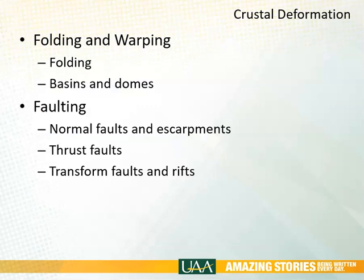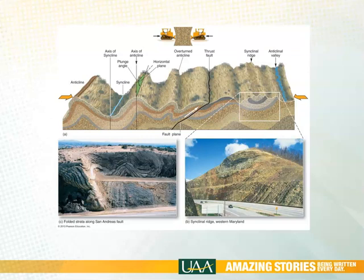Some of the things that happen whenever there's any kind of crustal deformation — whether we're accreting material or engaged in regular tectonic activity — includes folding, the creation of basins and domes, and the creation of faults or breaks in the crust, including thrust faults and sideways transform faults. Folding takes place when rock literally gets bent into beautiful folds. One of the best places this occurs is in the eastern United States, stretching from Pennsylvania down to Alabama, where you have cool linear ridges all formed by folds.